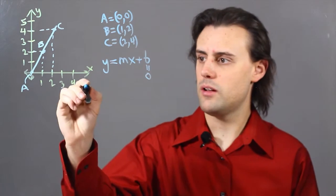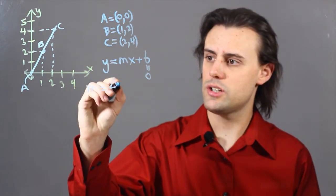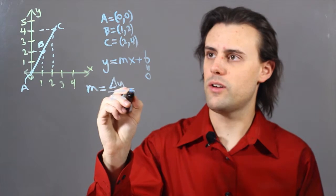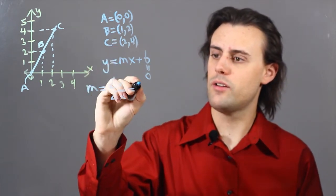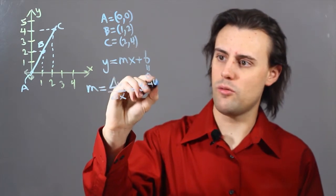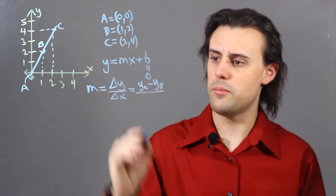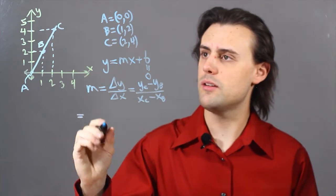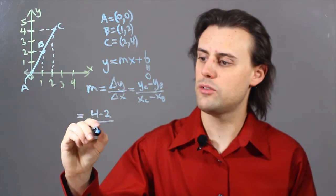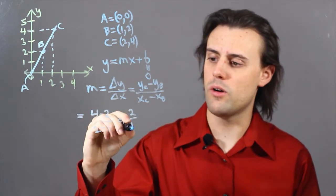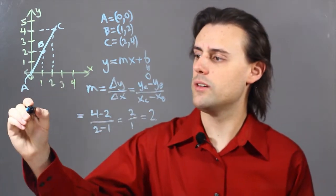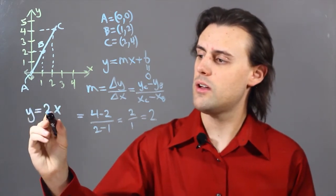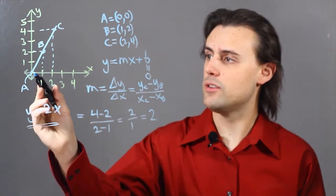And I can calculate m by considering the change in y over the change in x, using the given data points. So, if I consider, for example, C and B, I have (y_C - y_B) divided by (x_C - x_B). And this is simply going to be equal to (4 - 2) divided by (2 - 1), which is equal to 2 over 1, or simply 2. So, I have a line here that I'm graphing that's equal to y = 2x, where my slope is 2, and I have a direct variation.